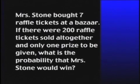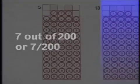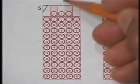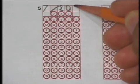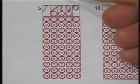Standard grids can also be used for answers involving fractions. For example, let's take the question, Mrs. Stone bought seven raffle tickets at a bazaar. If there were 200 raffle tickets sold altogether and only one prize to be given, what's the probability that Mrs. Stone would win? The answer is seven out of 200 or seven two-hundredths. Using one numeral or symbol per box, we write the answer across the top of the standard grid. Then we begin filling the circles with the matching numerals and symbols.